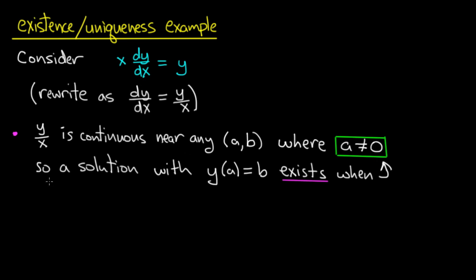Therefore, by the existence part of the theorem, a solution satisfying y(a) equals b exists so long as a is not equal to 0. If a equals 0, we don't know anything from the theorem — the theorem says nothing because the hypotheses are not satisfied.